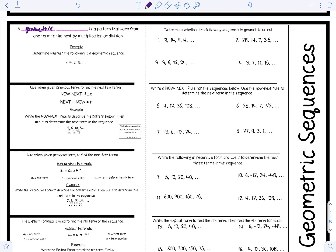A geometric sequence is a pattern that goes from one term to the next by multiplication or division. For example, we have 2, 4, 8, 16. To go from 2 to 4 we might think we add 2, from 4 to 8 add 4, from 8 to 16 add 8 — but the pattern is actually that we're multiplying by 2 each time. Since we are multiplying by 2, we call this a geometric sequence.